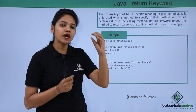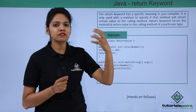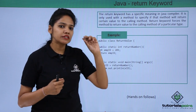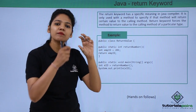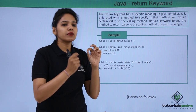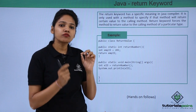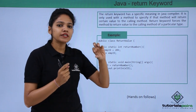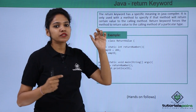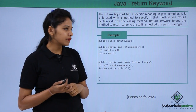For example, you have certain methods declared and these methods return certain values to the main method. The return keyword described in a method will force that particular method to return a value to the main method of that particular type. If you are returning an integer type value, it should match with the integer type. Let us see this with the help of an example.